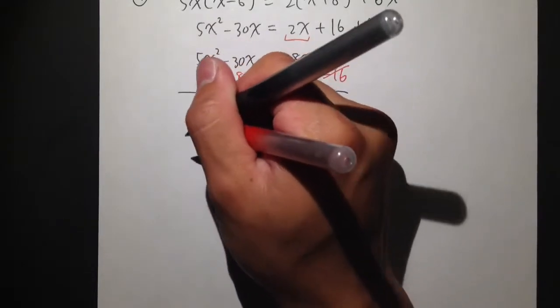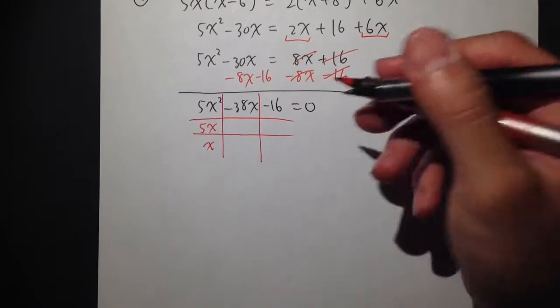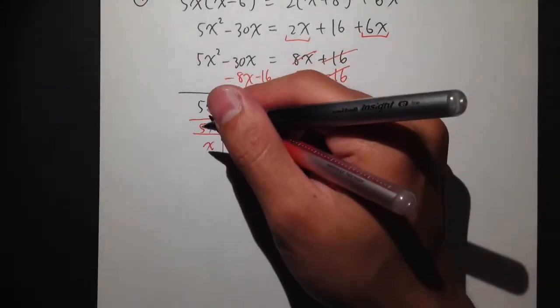So to get 5x squared, I know just one choice, right? Y-2-1 combinations. 5x times x gives us the 5x squared.